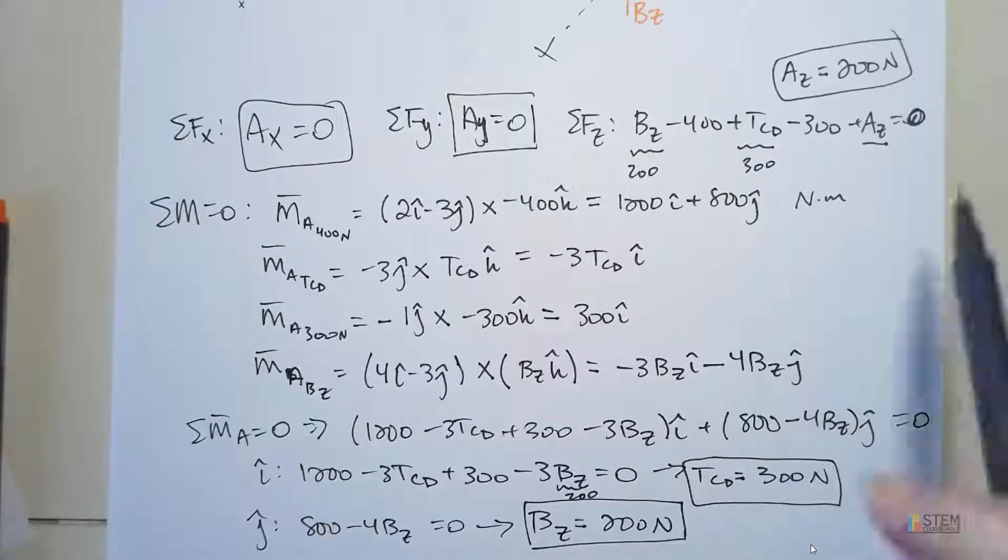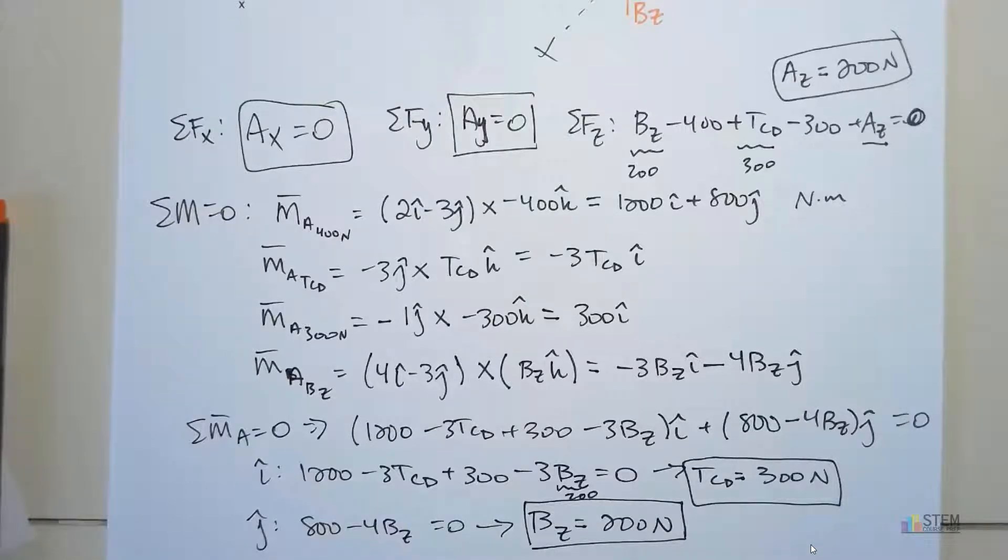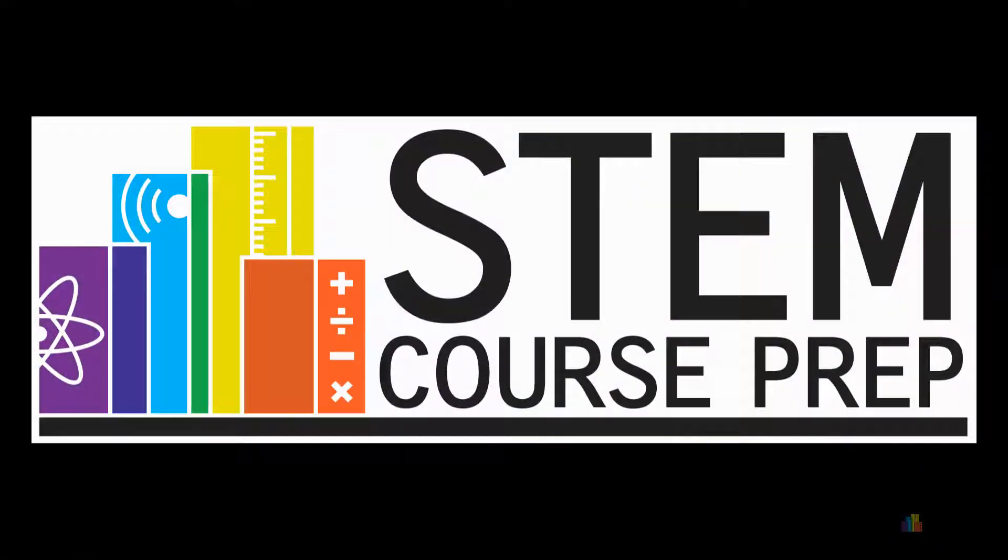So as long as you have these force values for your supports, that green plate will be supported and it won't have any rotation and it's not going to have any translation. I'll see y'all in the next video for another example. Thank you.